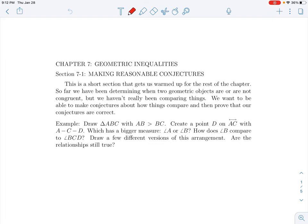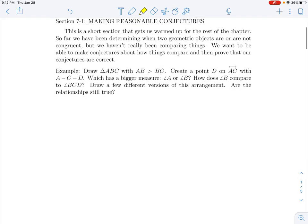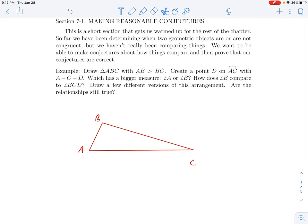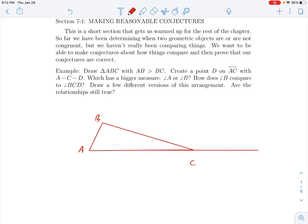Chapter 7 is mostly about inequalities, comparing things as bigger or smaller in the context of geometric diagrams. And just as an example of what we're talking about, suppose I draw triangle ABC where AB is smaller than BC. So maybe my triangle looks something like so. And create point D on the line AC where C is between A and D.